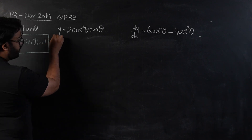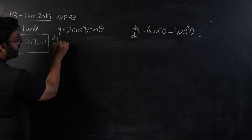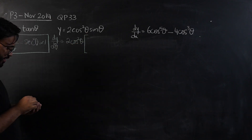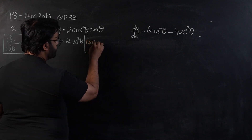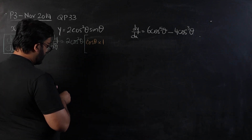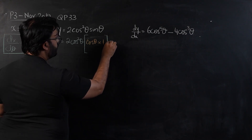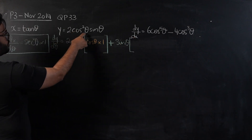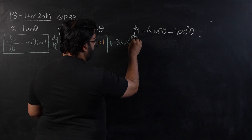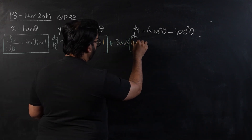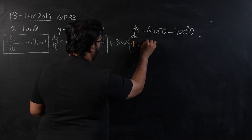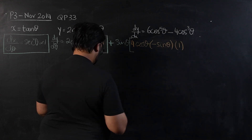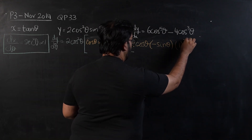For dy by dθ, I am going to apply the product rule. So, for dy by dθ, we are going to keep 2cos²θ as it is and first differentiate sinθ — it will become cosθ. And for the second part of our product rule, plus, we are going to keep sinθ as it is and differentiate 2cos²θ. The power will come behind and gets multiplied to give 4, and differentiation of cosθ would be minus sinθ. This would be our final differentiation.